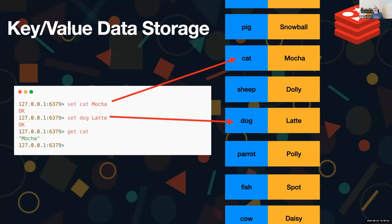With Redis we can connect to it - it's got a CLI and SDKs for pretty much every programming language, including MicroPython. We interact with it in a command-based way. Here we want to set the value of a key: we're going to set 'cat' to 'mocha', which might be the name of a cat, and set 'dog' to 'latte' - we've got a bit of a coffee theme going on. The blue things on the right are our keys, the bit of information we need to get the value back. We do 'GET cat' and we get back 'mocha', the value we stored there.